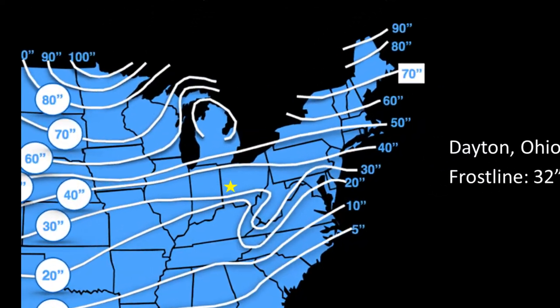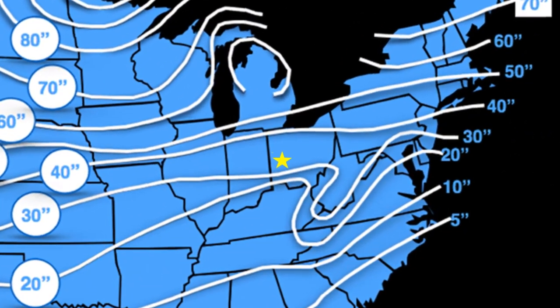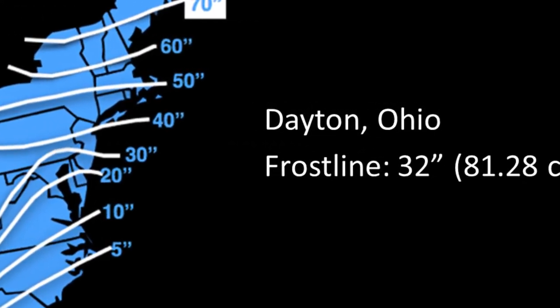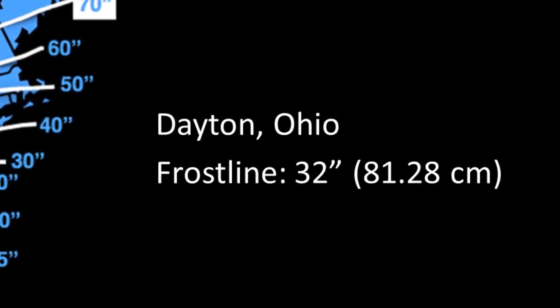Here in Dayton, we project the frost line, or the depth of the frozen soil, to be 32 inches below the top of the surface. This is the same as 81.28 centimeters.